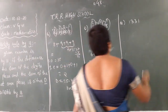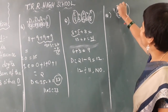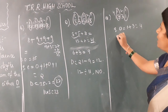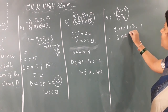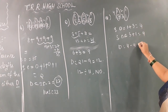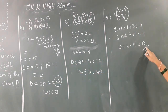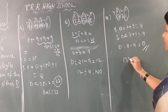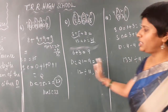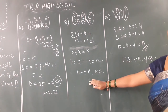One more example: the number 1331. Add up the odd-place digits: 1 plus 3 equals 4. Sum of the even-place digits: 3 plus 1 equals 4. Difference: 4 minus 4 equals 0. As per the rule, if the difference is 0 the number is divisible by 11. So 1331 is divisible by 11. I have shown you three examples: one where you got a multiple of 11, one where you got 0, and one where the result was not divisible.